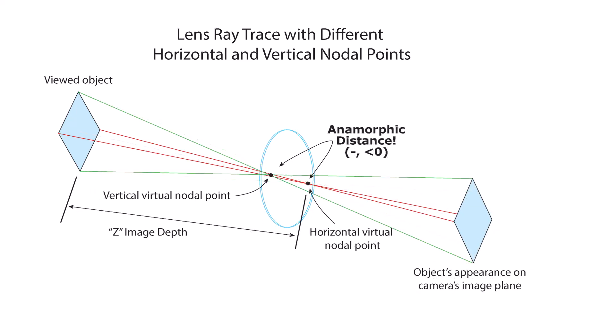With a negative anamorphic distance, the vertical nodal point is closer to the scene and nearby objects blow up vertically.